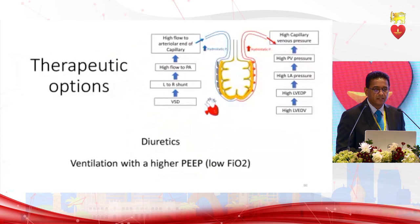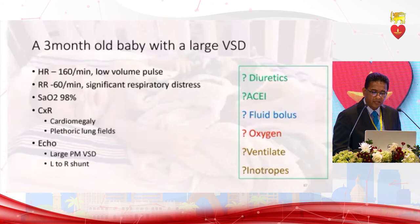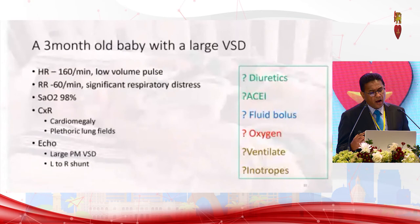So for the three-month-old with a large VSD, the best management is diuretics and ACE inhibitors. Oxygen should not be used. Ventilation and inotropes depend on clinical condition — inotropes alone are not a good option.